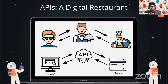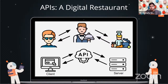In client-server architecture, the client can be anything — an ATM machine, railway station ticketing machines, your watch, mobile phone, laptop, or TV. Anything with an interface can be a client. You then use an API to contact the server, get back some data, and display it on that client.